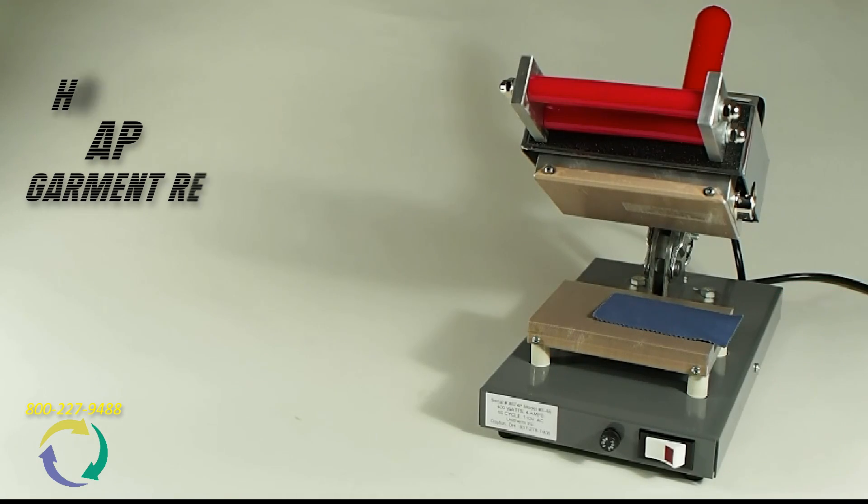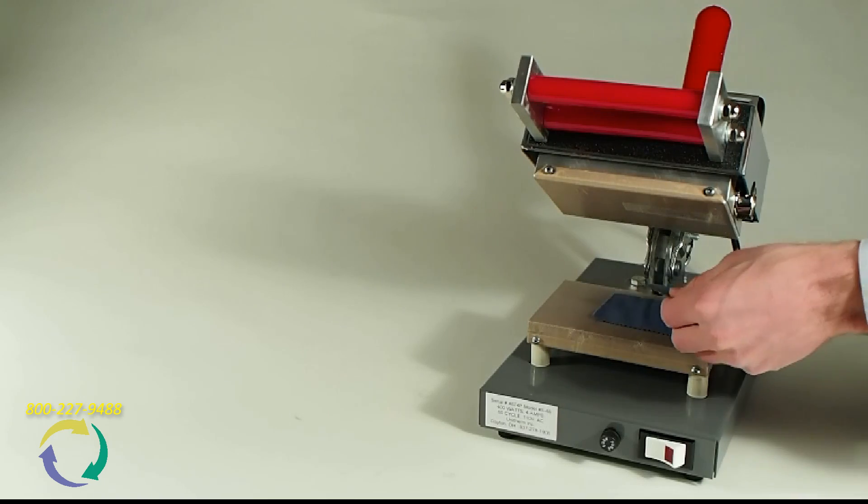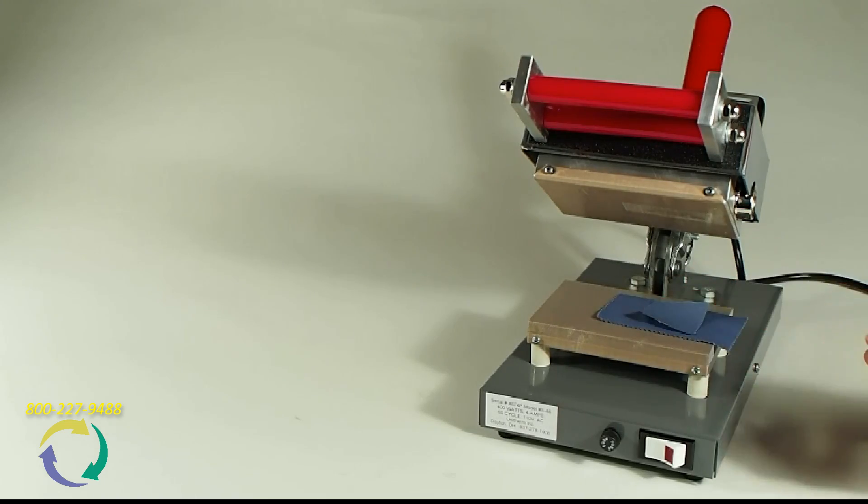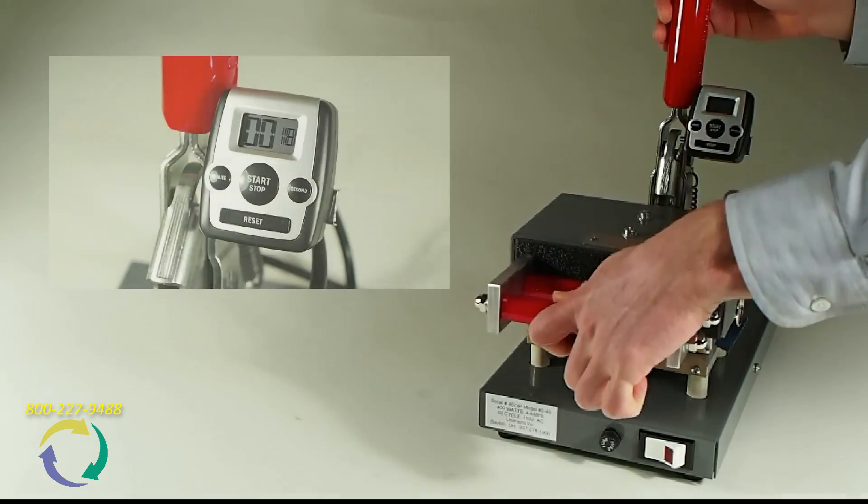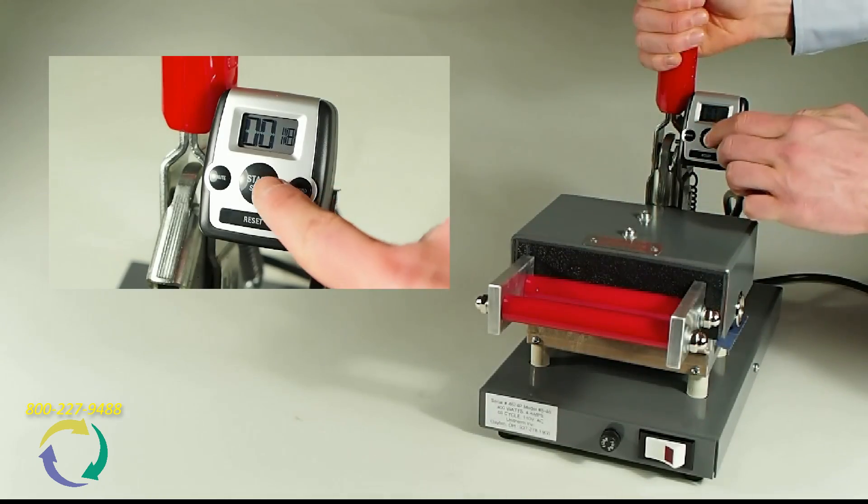Place the garment on the bottom table. Then place the garment repair patch on top. Clamp down the top platen and press start on the timer.